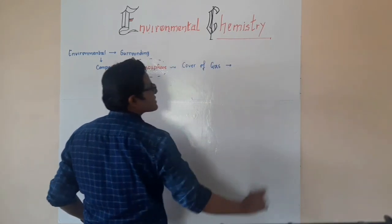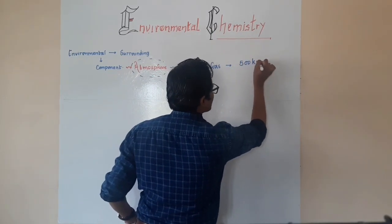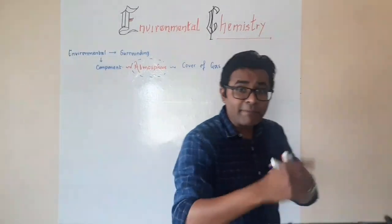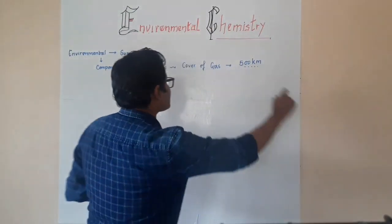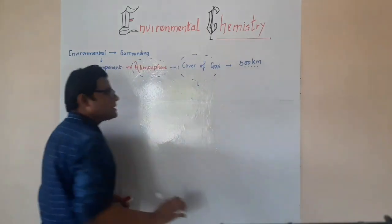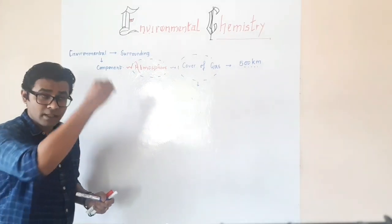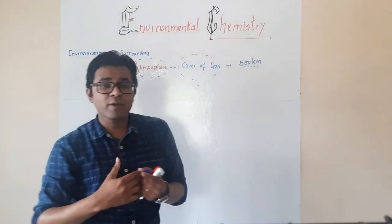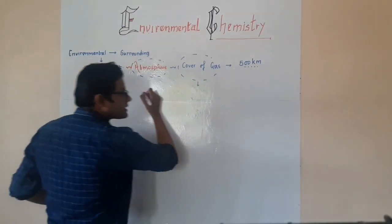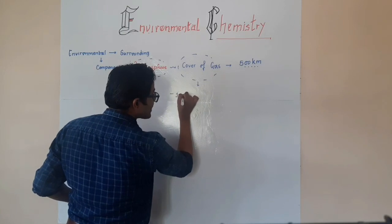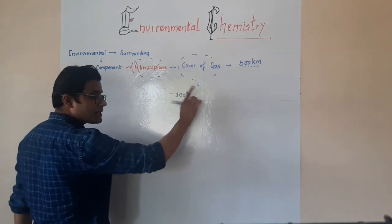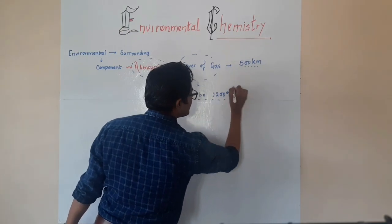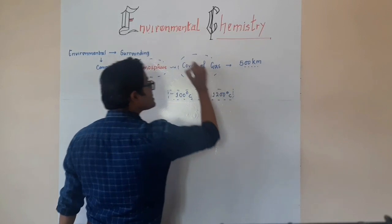This cover of gas extends up to approximately 500 kilometers. Temperature fluctuations occur because these gases absorb the radiations — cosmic rays — coming from the sun. Some absorb and some reflect, so the temperature varies throughout the entire atmosphere with respect to altitude, ranging from minus 100 degrees Celsius to 1,200 degrees Celsius. This is the range of temperature one can see in different regions of the atmosphere.